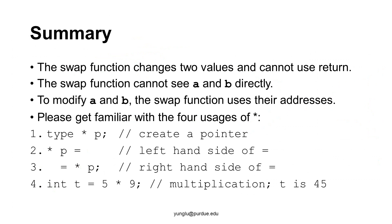To summarize, the swap function needs to change two values, 'a' and 'b'. Thus, the swap function cannot use return because a function can return only one value. The swap function cannot see 'a' or 'b' directly because they are in another frame. In order to modify them, the swap function uses the addresses of 'a' and 'b' — that means it uses pointers as the arguments. Please become familiar with the four ways of using asterisk: the first is to create a pointer (a type must be used); the second is the left-hand side of an assignment; the third is the right-hand side of an assignment; and the fourth is multiplication.